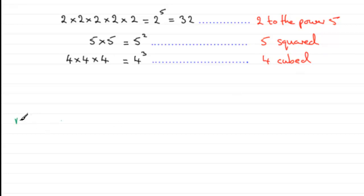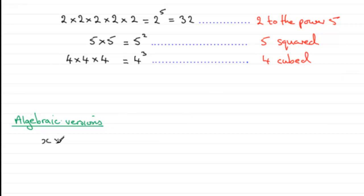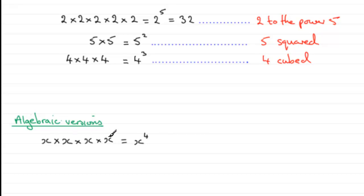Now you can often find that you'll be dealing not only with numerical versions of this but algebraic versions, where we're working with letters as well as numbers. So for instance, if asked to simplify x times x times x times x and write it for short, this is x repeatedly multiplied by itself four times over, so it's x to the power four. Notice it's not four x — four x would be x plus x plus x plus x.